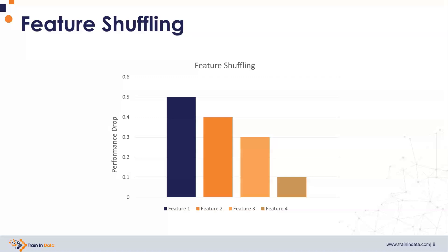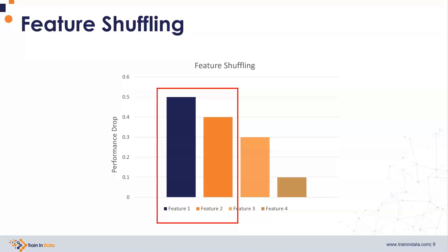So this is as far as interpretation goes. If we wanted to move on and select features, then we would select the top ranking features. We can do this by selecting the top percentile of features, or the top X number of features, or those features that induced a drop in performance above a certain threshold. These are some arbitrary values that we need to figure out ourselves. This is how permutation feature importance works — it consists of randomly shuffling the order of the features. There is an element of randomness that is going to have some consequences we need to consider when evaluating feature importance using this method. In the next video, I'm going to talk a little bit more about randomness and how we can accommodate it.